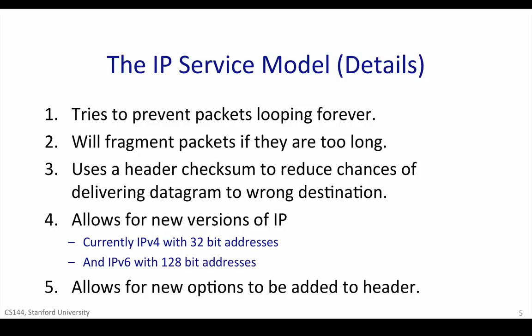Finally, IP allows new fields to be added to the datagram header. In practice, this is a bit of a mixed blessing. On the one hand, it allows new features to be added to the header that turn out to be important but weren't in the original standard. On the other hand, these fields need processing and so require extra features in the routers along the path, breaking the goal of a simple, dumb, minimal forwarding path. In practice, very few options are used or processed by the routers.